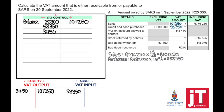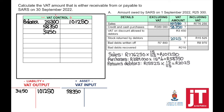Next, we have stock returned by debtors, and we need to calculate the VAT amount. They provided us with the amount including VAT, so to find the VAT amount we say times 15 divided by 115. Stock returned by debtors means output VAT is going to be debited. If output VAT is debited, liabilities decrease, and the VAT control account will be minus.